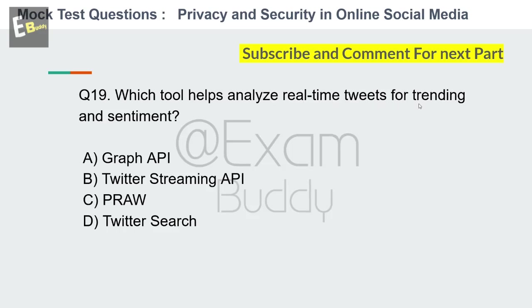Question 19: Which tool helps analyze real-time tweets for trending and sentiment? Options: Graph API, Twitter Streaming API, PRAW, Twitter Search. The answer is D: Twitter Streaming API.